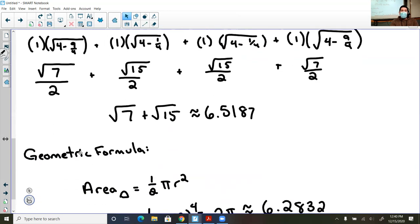Well, what if I recognize a geometric formula? Well, the area of a circle is pi r squared. So the area of a semicircle would have to be pi r squared over 2, or half of pi r squared.